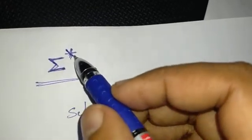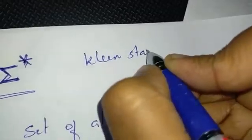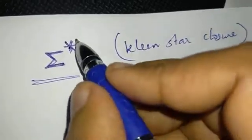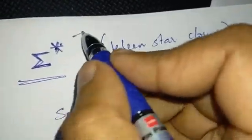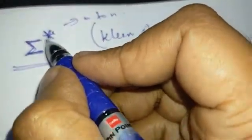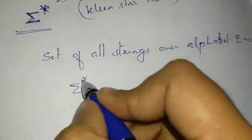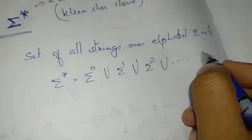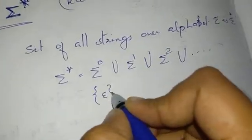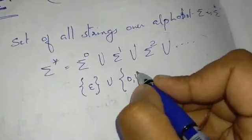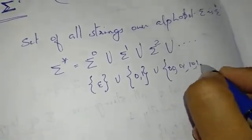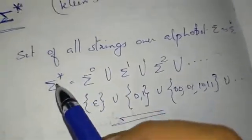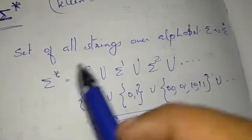Next is sigma star, called the Kleene star closure. Sigma star is the set of all strings over the alphabet sigma. Sigma star equals sigma^0 union sigma^1 union sigma^2 union ... union sigma^n. Sigma^0 is epsilon, sigma^1 is {0, 1}, sigma^2 is {00, 01, 10, 11}, and so on. This is the Kleene star closure — 0 or more combinations is called star.